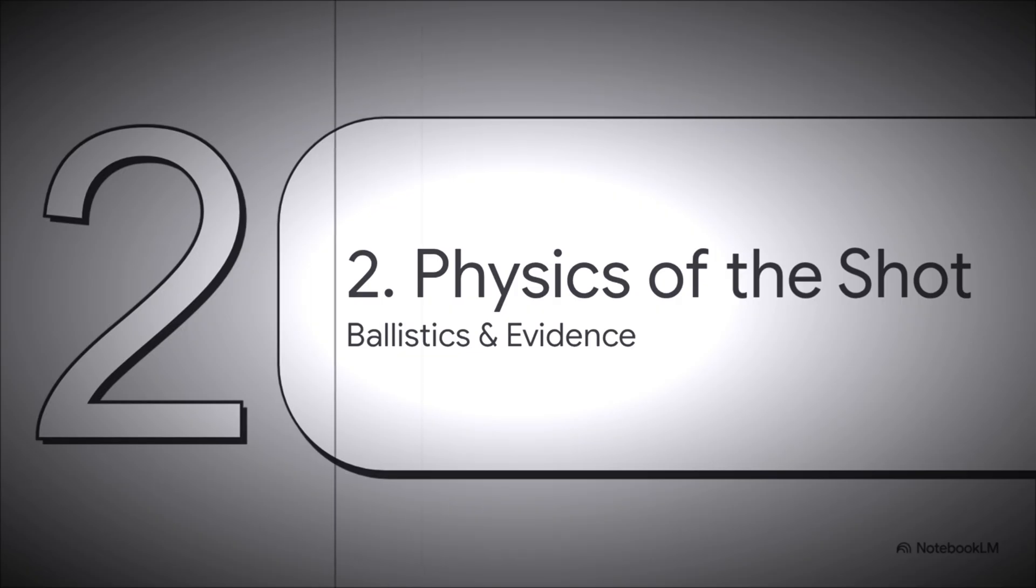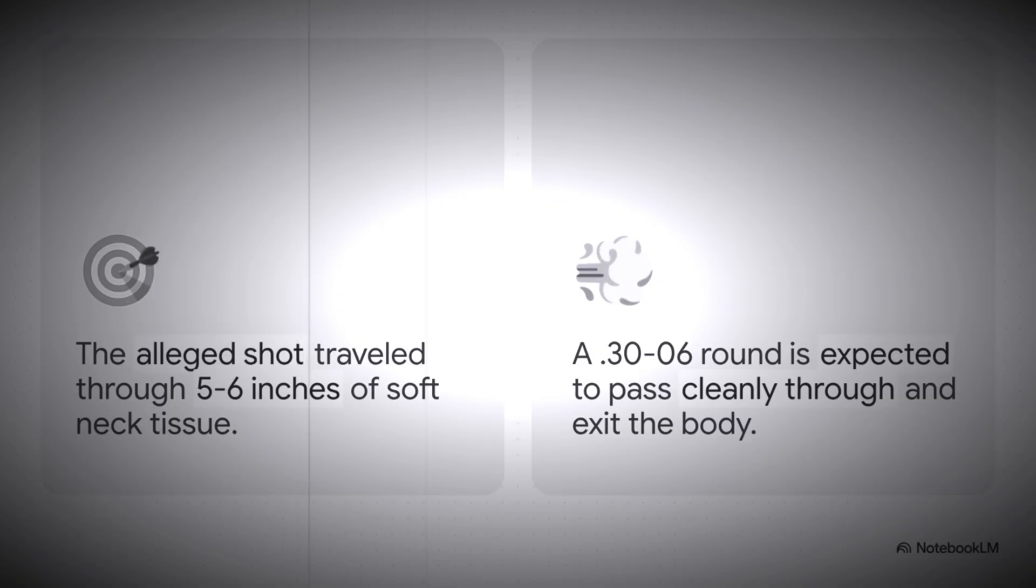To get to the bottom of this, the analyst goes back to basics. The simple, undeniable physics of the shot. If you follow that official 10-in-10 angle, the bullet would have traveled through only about 5 or 6 inches of soft neck tissue. And any ballistics expert will tell you, a round like that should have gone straight through. No question.